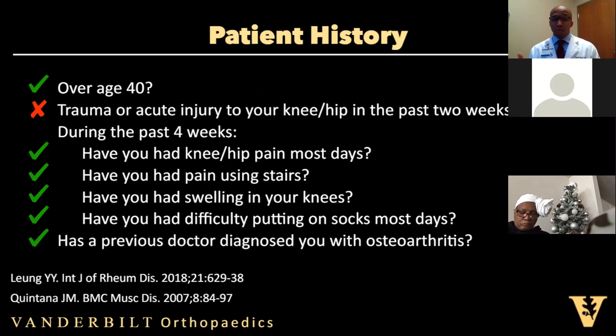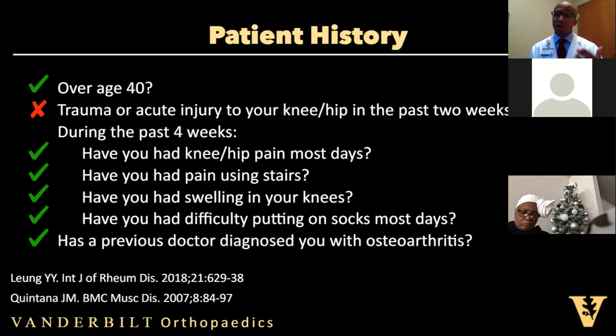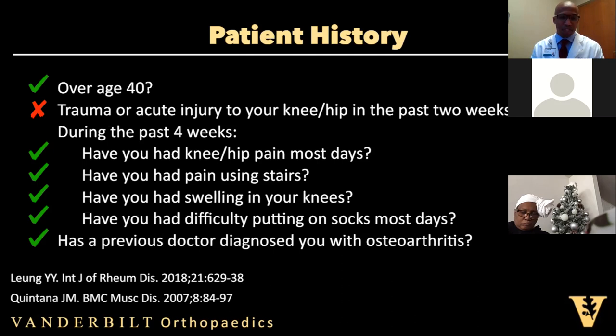When we get the history, we know that you're busy, especially in primary care offices with the number of patients and conditions you're managing. So a concise history can be helpful. We have found through screening the literature that this combination of questions will help identify those with the highest likelihood ratio of having osteoarthritis: if the age is over 40, if there is no recent history of trauma, and if over the past four weeks there have been this combination of symptoms. Answering in the affirmative for most of these and in the negative for the trauma question can help identify individuals with hip and knee osteoarthritis.